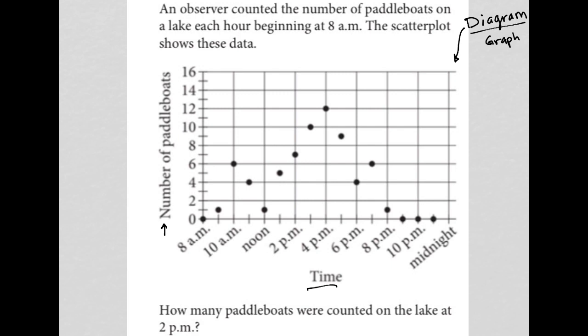Given what time it is and the number of paddle boats. So, the question says, an observer counted the number of paddle boats on a lake each hour beginning at 8 a.m. The scatter plot shows these data.